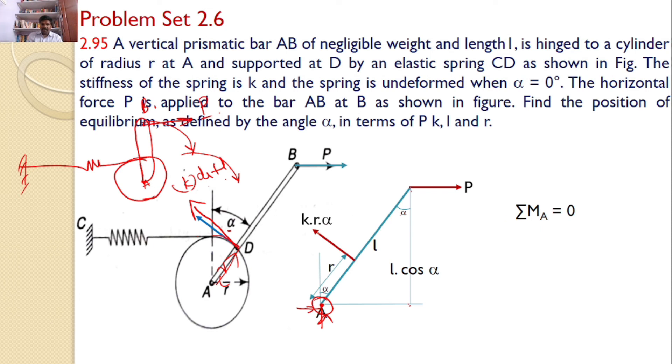If you take the moments about point A, K R alpha will introduce a moment in this direction. P will introduce a moment in this direction at a distance of r. The line of action of P is at a distance of L cos alpha from point A. Hence, taking moments about A, I can write the expression as K R alpha into the distance R equals P into L cos alpha.